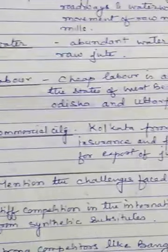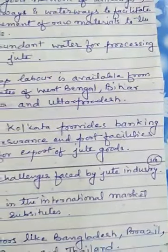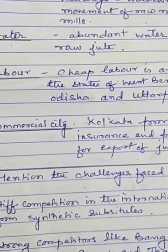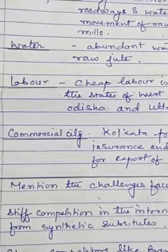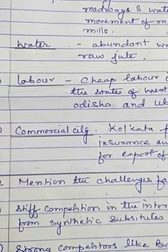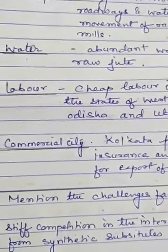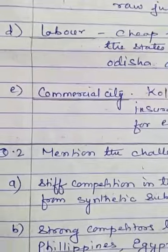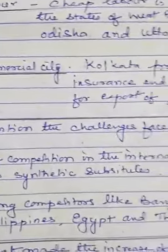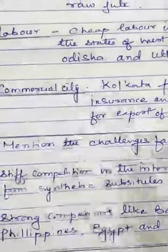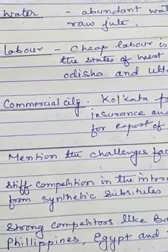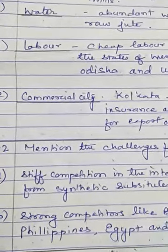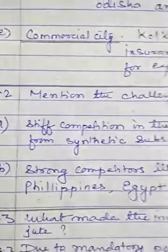Question number two: mention the challenges faced by the jute industry. Stiff competition exists in the international market from synthetic fibers. Nylon fibers are being used for making nylon bags and sacks for packing goods instead of jute bags, because nylon bags are much cheaper than jute bags. Also, strong competitors like Bangladesh, Brazil, Philippines, Egypt, and Thailand are selling their jute at very cheap rates compared to India, so Indian jute industries face strong price competition in the international market.